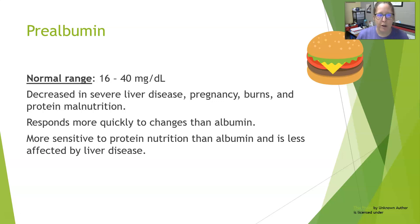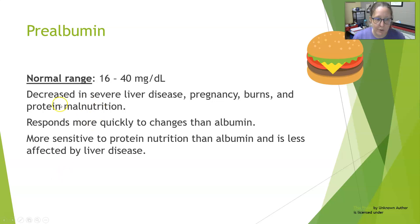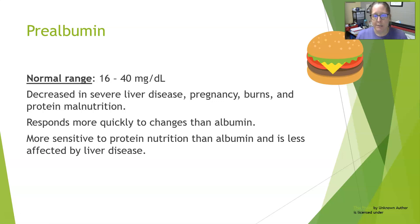The normal range for prealbumin is 16 to 40 milligrams per deciliter. The other name for prealbumin is transthyretin. It is decreased in severe liver disease, pregnancy, burns, and protein malnutrition. Prealbumin is used mostly to assess malnutrition and liver synthetic capacity — it changes and responds more quickly than albumin. It would decrease before albumin decreases in liver disease, and in an elderly patient suffering from protein malnutrition, the prealbumin will decrease way sooner than albumin.